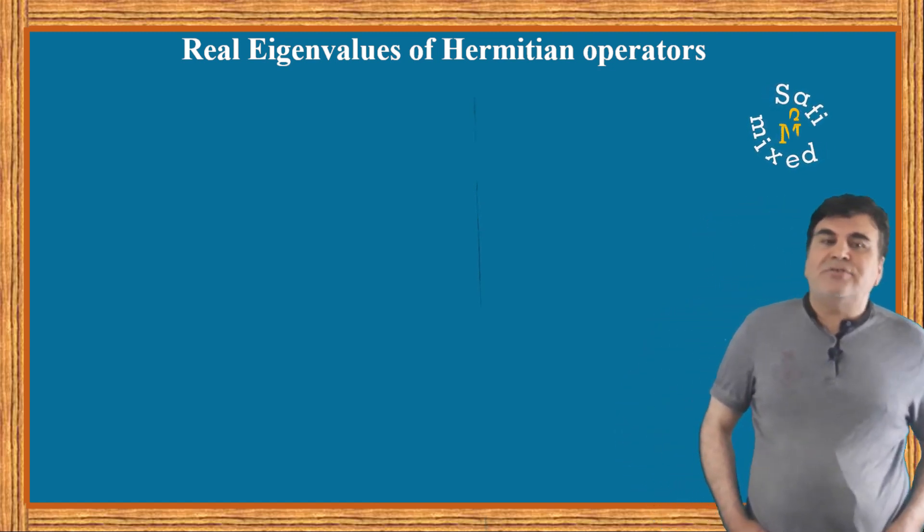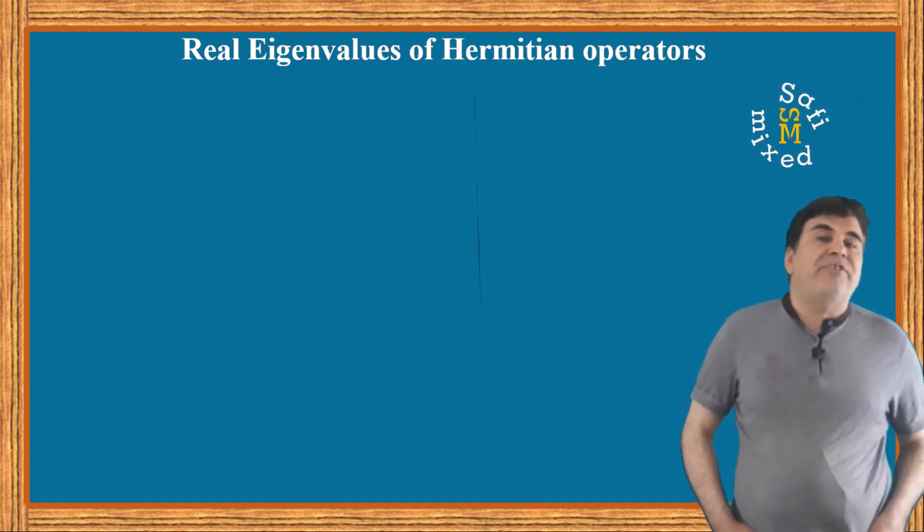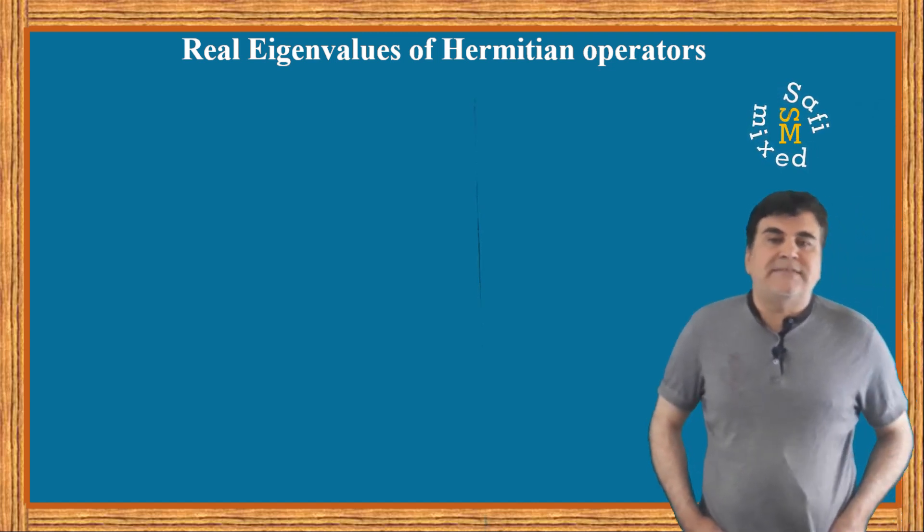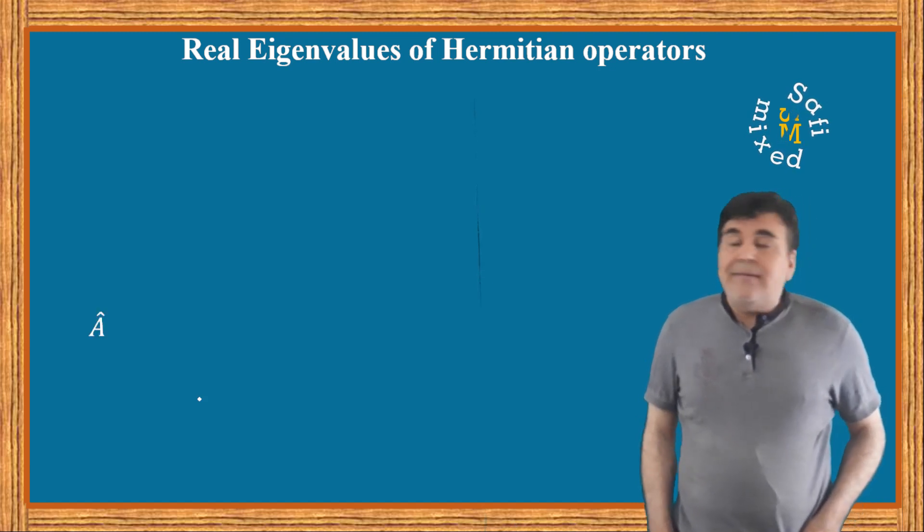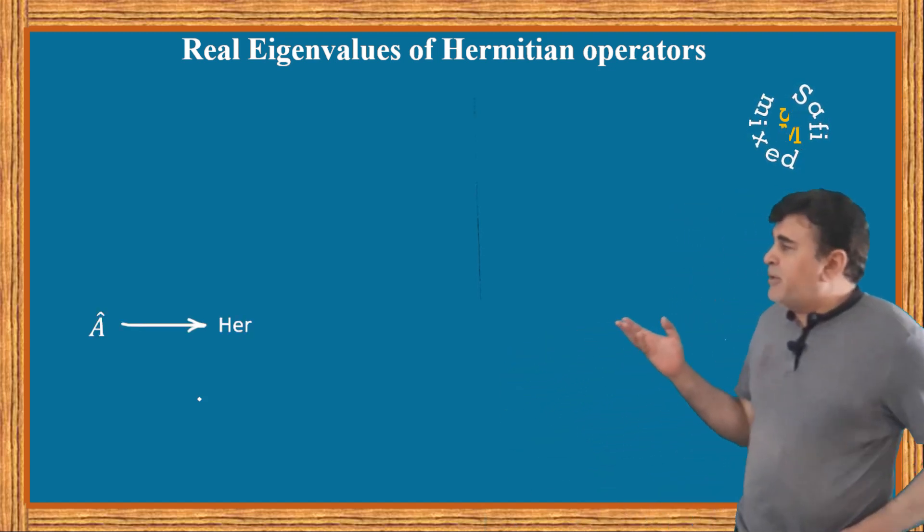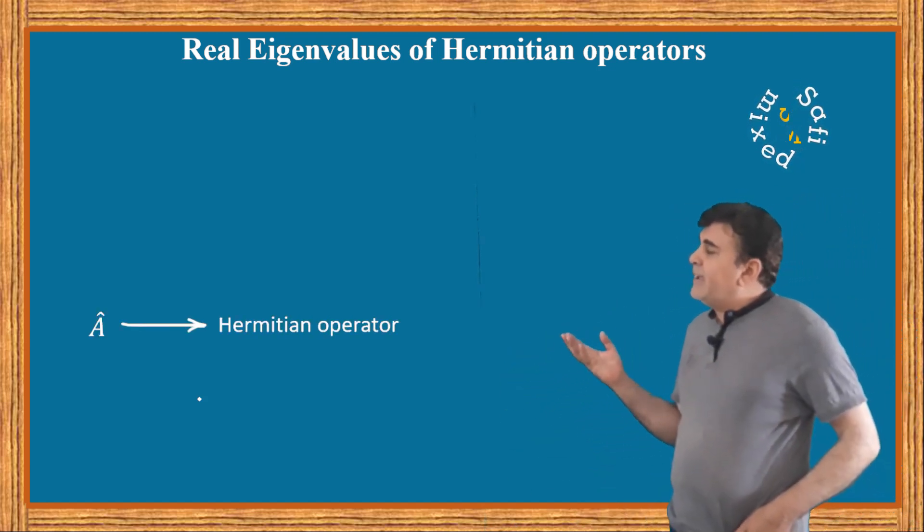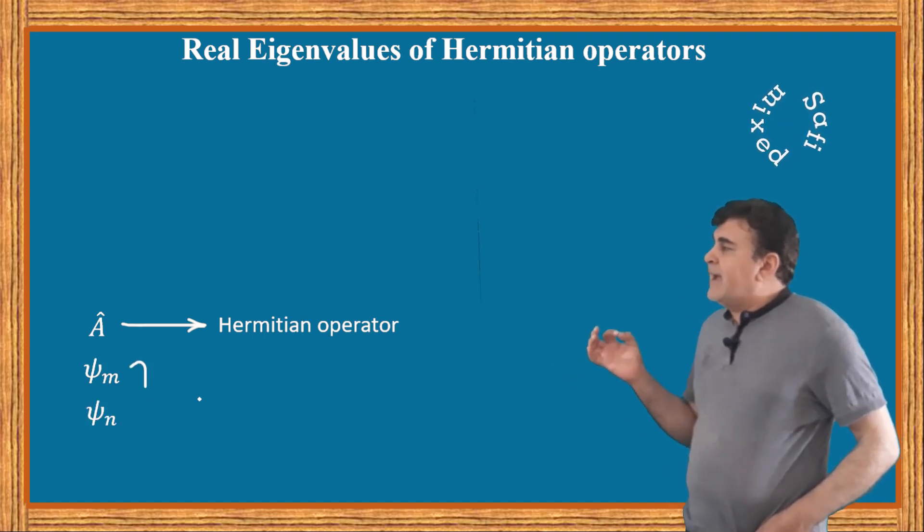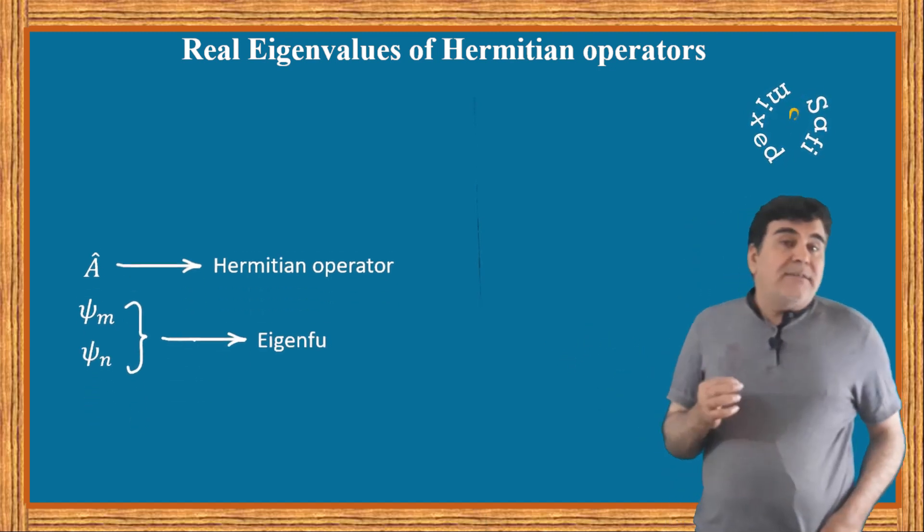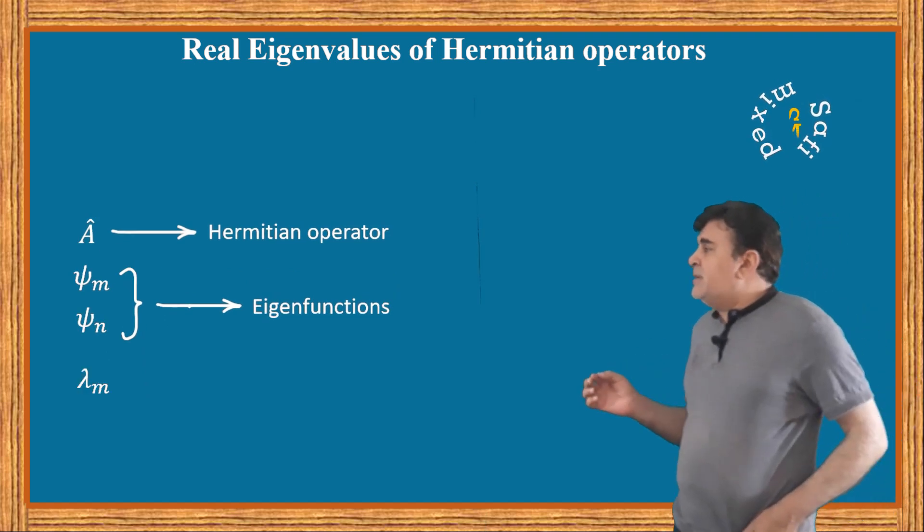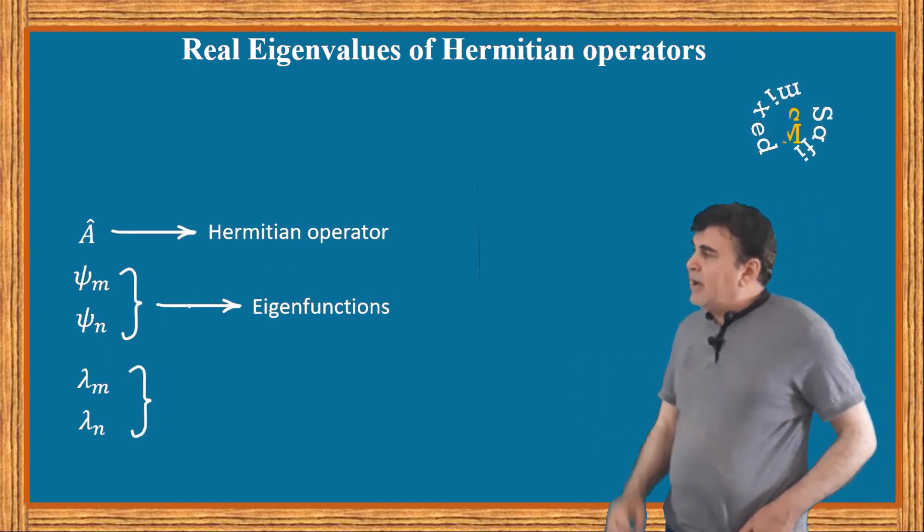To this end, let A be a Hermitian operator with two different eigenfunctions ψ_m and ψ_n, and let the corresponding eigenvalues be λ_m and λ_n respectively.